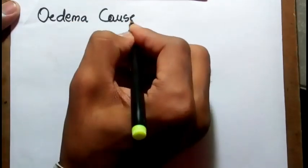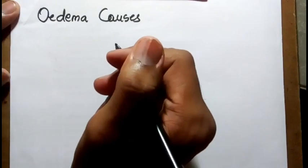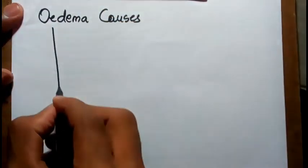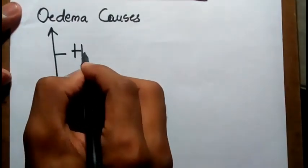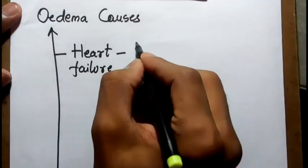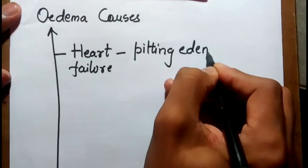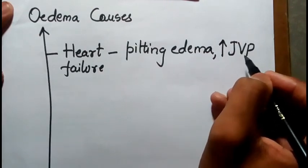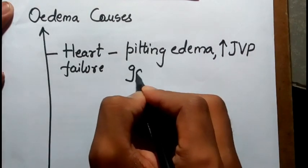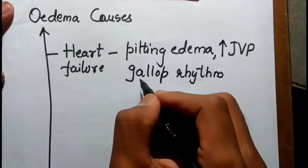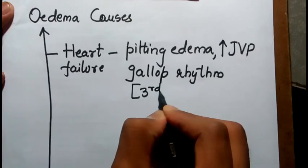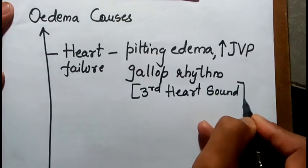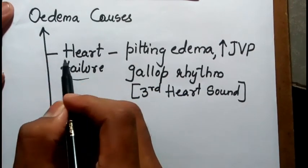Edema causes can be differentiated by clinical examination. In heart failure, we see pitting edema with an increase in JVP (jugular venous pressure). We may also find a gallop rhythm, which is a third heart sound seen in edema caused due to heart failure.